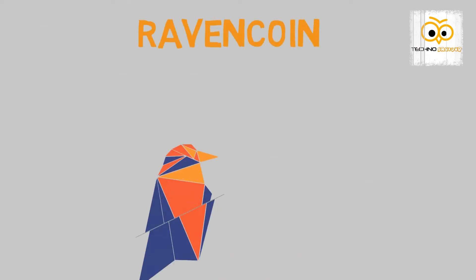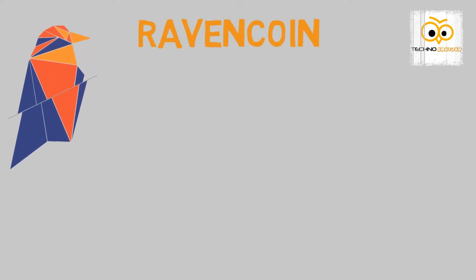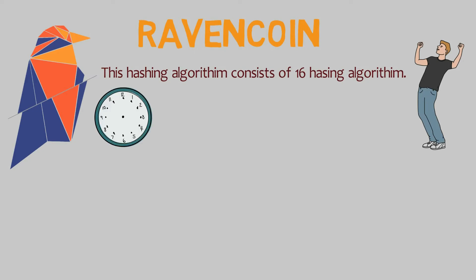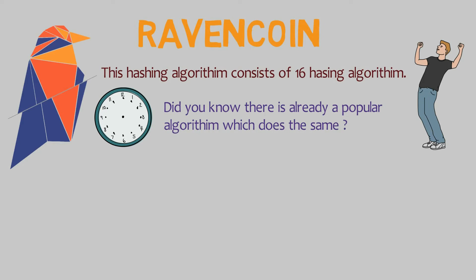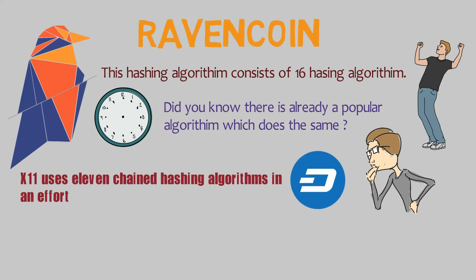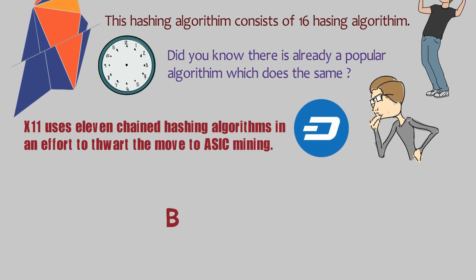Let's discuss Ravencoin. This coin uses 16 hashing algorithms, so it looks like ASICs won't be able to beat it. But did you know there's already a popular algorithm that tried the same approach? If you guessed Dash, you are absolutely correct. Dash uses the X11 algorithm, which uses 11 chained hashing algorithms in an effort to thwart ASIC mining.